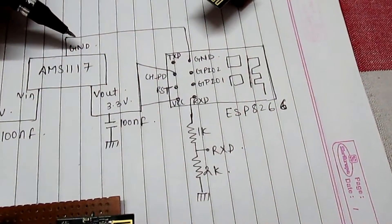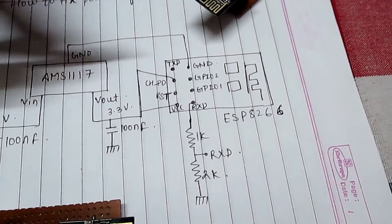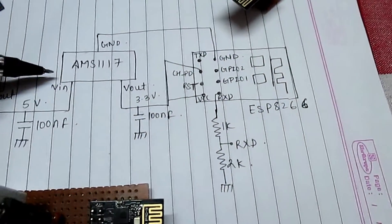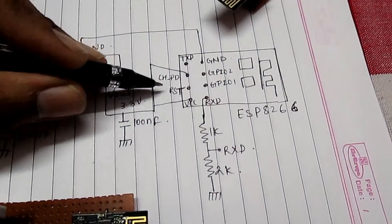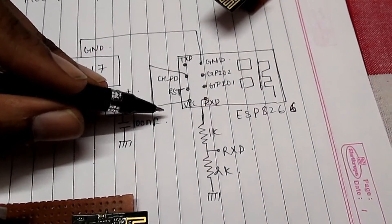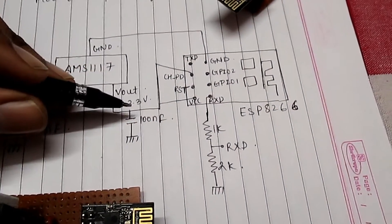I don't have a battery, so I am connecting AMS117 that gives 3.3 volts. Just connect Vout pin to the chpd pin and vcc pin of ESP8266. When ESP8266 requires high current, then this capacitor will be very useful.